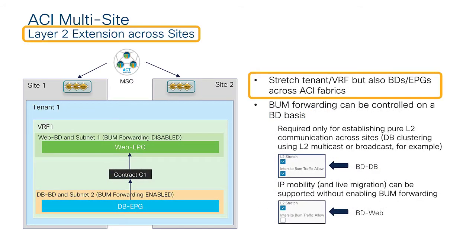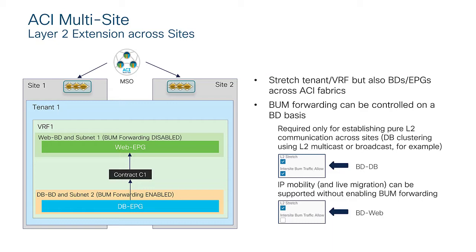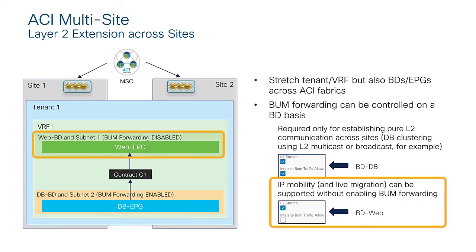The last use case covers stretching both EPGs and the bridge domain across sites. The first option sets the L2Stretch flag but not the inter-site BUM traffic allow flag. This allows the same subnet to exist across sites and enables endpoint mobility — cold migration for disaster recovery or live migration via vSphere vMotion — without extending flooding. This prevents a broadcast storm in Site 1 from propagating to Site 2, and is the safest possible way to extend a bridge domain.